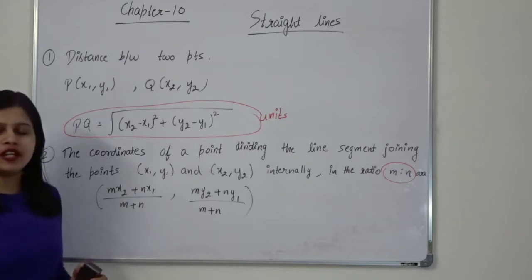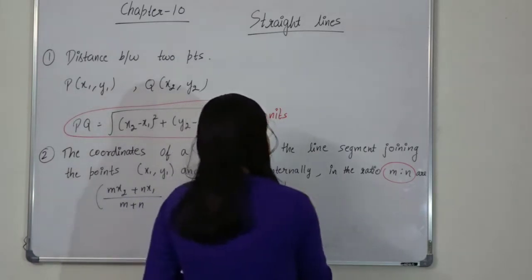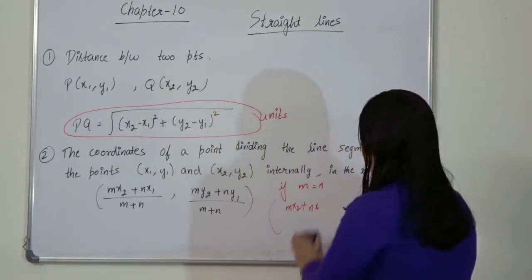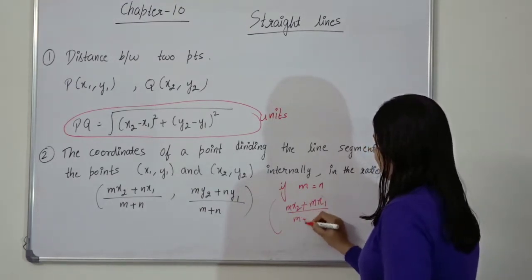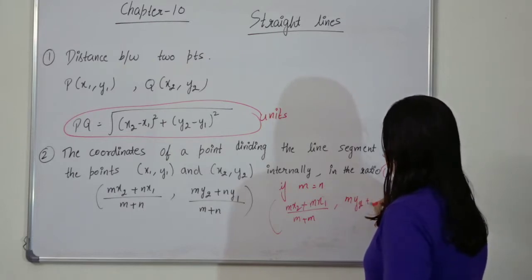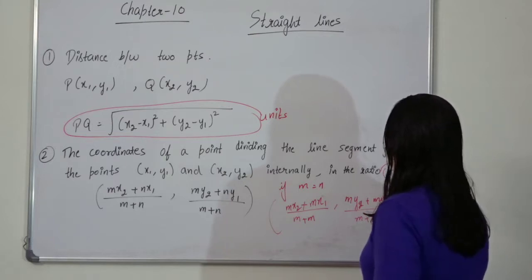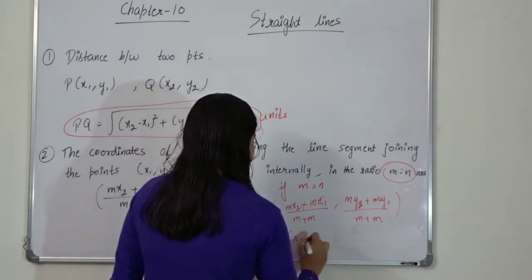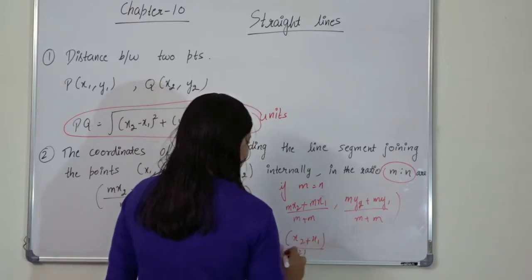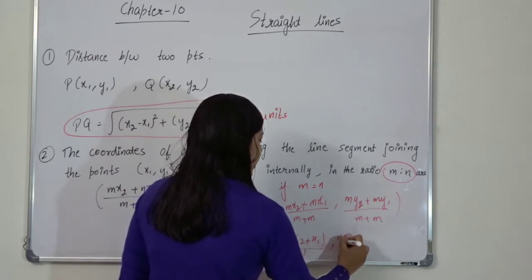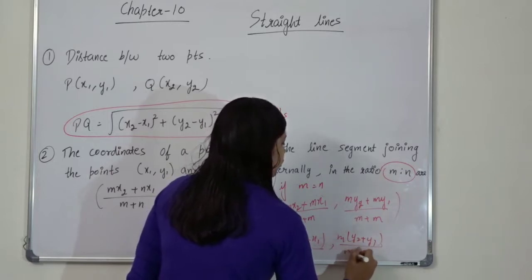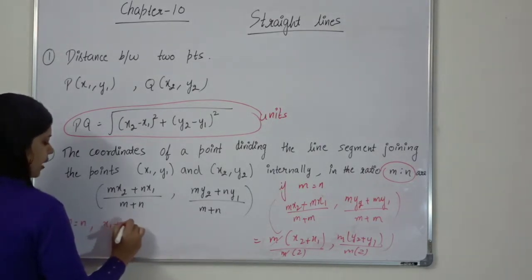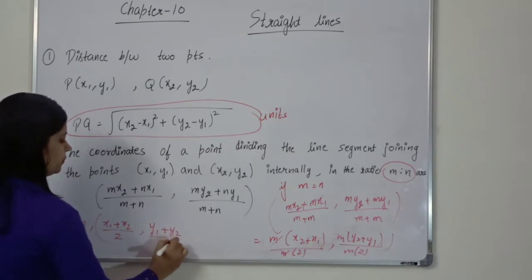What if M equals N? That means ratio 1:1. If M equals N, then taking M as common: x-coordinate becomes M·(x2 + x1) over 2M, so M cancels, giving (x1 + x2) divided by 2. Similarly, y-coordinate becomes (y1 + y2) divided by 2. So if M equals N, the coordinates are the midpoint formula: ((x1 + x2)/2, (y1 + y2)/2).